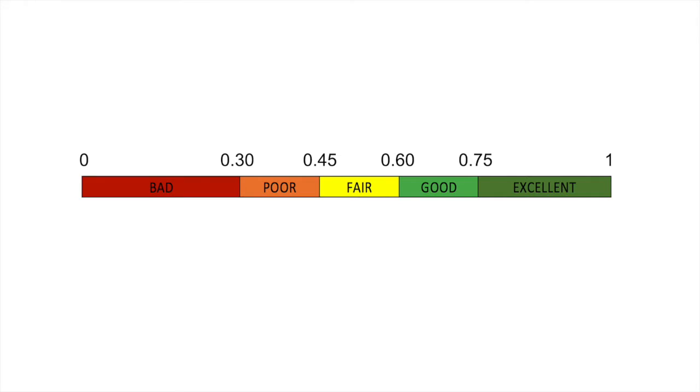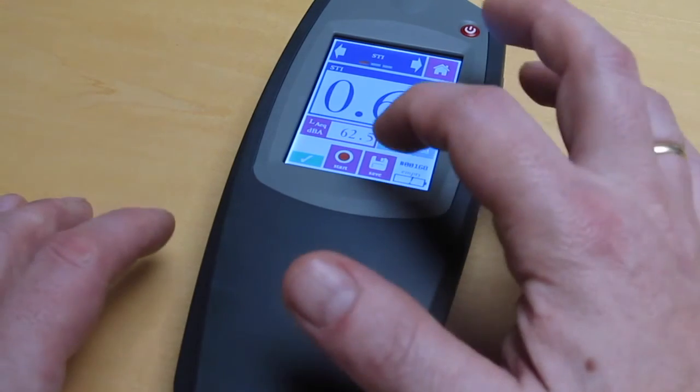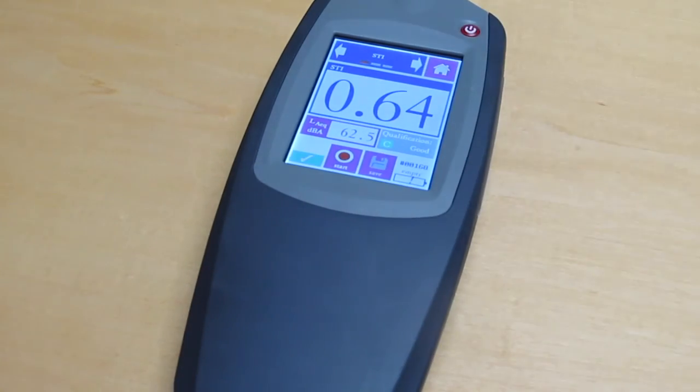The STIPER result is an index between 0 and 1. The higher the result, the better the overall speech intelligibility. After each valid measurement, press save to store your results. You can review saved data on the analyzer or download data over USB later on.